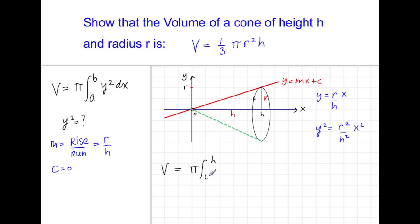Using the formula, v equals pi, our limits are h and 0 along the x-axis of y squared, which is r squared over h squared x squared dx. Now, r squared and h squared are constants, so we can move these to the left-hand side of the integral symbol. So we write pi r squared over h squared times the integral of x squared dx between h and 0.